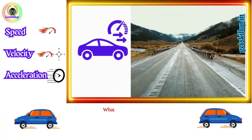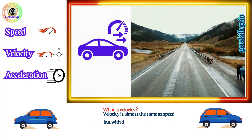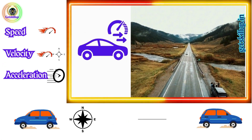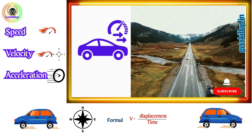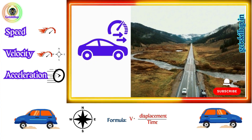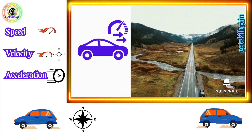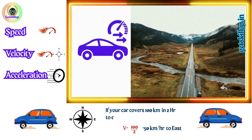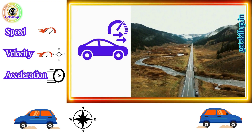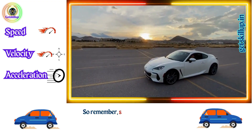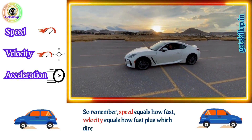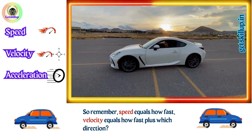What is velocity? Velocity is almost the same as speed but with direction. Formula: velocity equals displacement by time. Example: let's say you drive 100 km east in 2 hours — then your velocity is 50 km to the east. So remember: speed equals how fast; velocity equals how fast plus which direction.